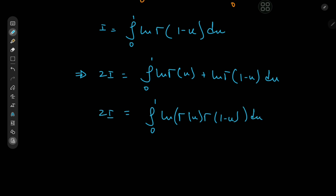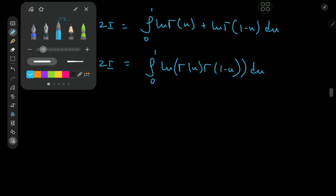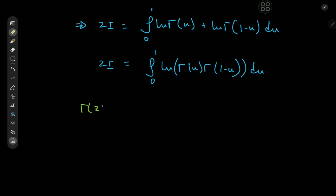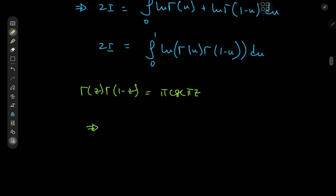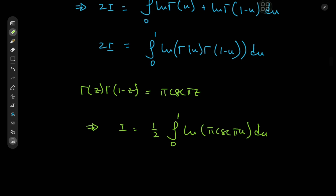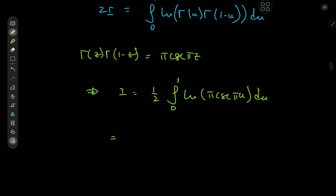This is very useful because we have Euler's reflection formula, which I love applying whenever possible: Γ(z) · Γ(1 − z) = π · csc(πz). So this implies that 2I = ∫₀¹ log[π · csc(πu)] du. The name of the dummy variable doesn't matter, so we can use z throughout.